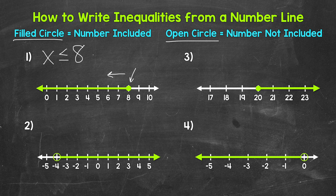Let's move on to number 2, where we have an open circle at negative 4. And then we have an arrow pointing to the right, going the direction of all of the numbers greater than negative 4. So we have x greater than negative 4.